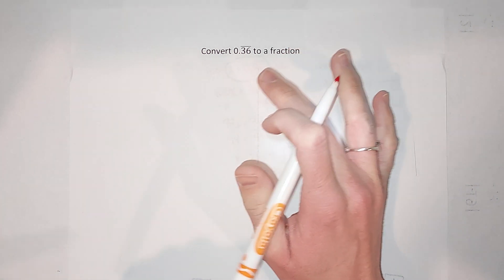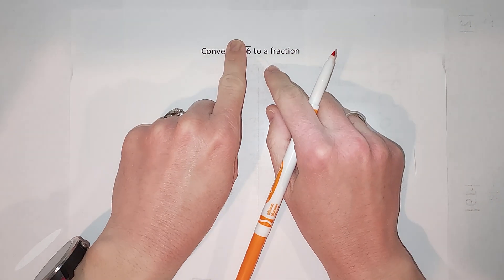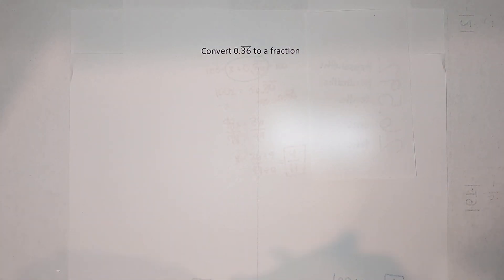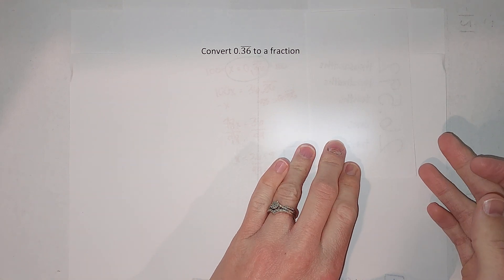This line above here means that 3, 6 literally goes on forever: 0.363636, it keeps going. Our typical way of converting a decimal to a fraction doesn't work, but there's another strategy that is not too tricky that works very well.